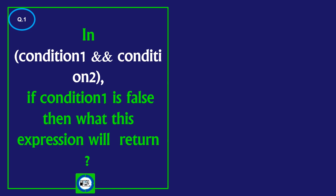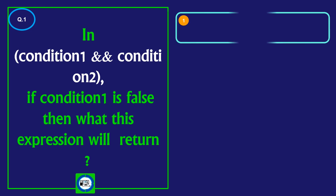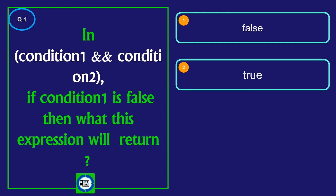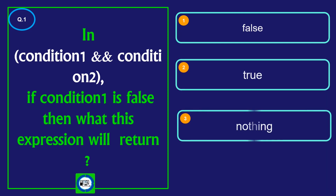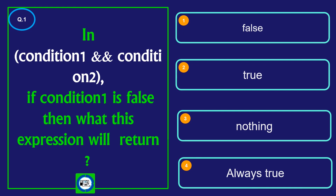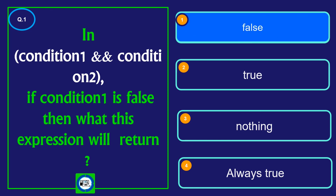If condition 1 is false, then what will this expression return? Option 1: false. Option 2: true. Option 3: nothing. Option 4: always true. Find the right answer. Take your time. Hopefully you have chosen the right answer. And the answer is false.